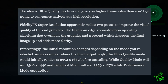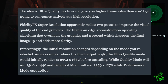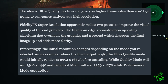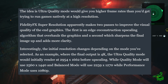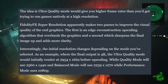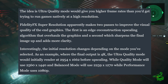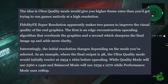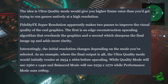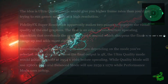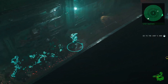For example, where the final output is 4K, Ultra Quality mode will be initially rendered at 2954 by 1662 before upscaling, while Quality mode will use 2560 by 1440, Balanced mode will use 2259 by 1270, and Performance mode uses 1080p.